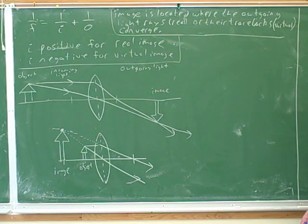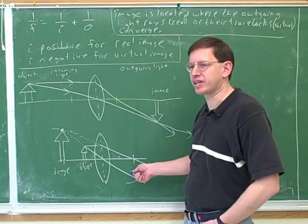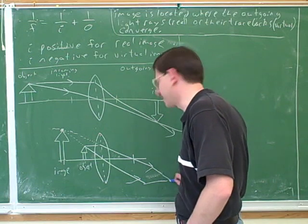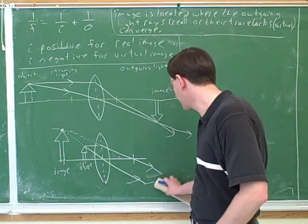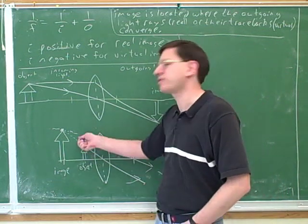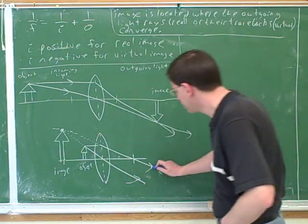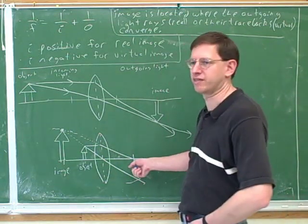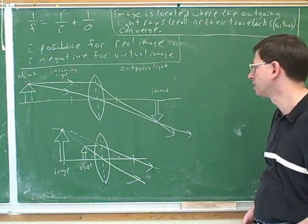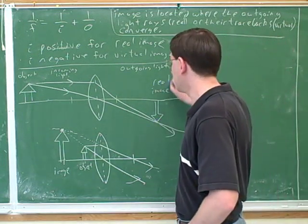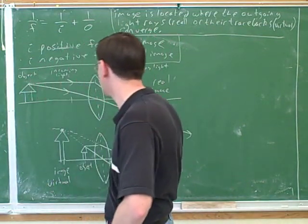One thing to be careful of: a lot of the time people assume the rays have to converge and start bending them as a cheat. The best thing to do is use a ruler and draw them out accurately. If the outgoing light rays don't seem like they're going to converge, that's perfectly okay — just make their tracebacks converge. The term 'traceback' isn't official; it's just a convenient way to describe tracing rays back. So this first example is a real image because we used the outgoing light rays, and the second is virtual because we had to use the tracebacks.